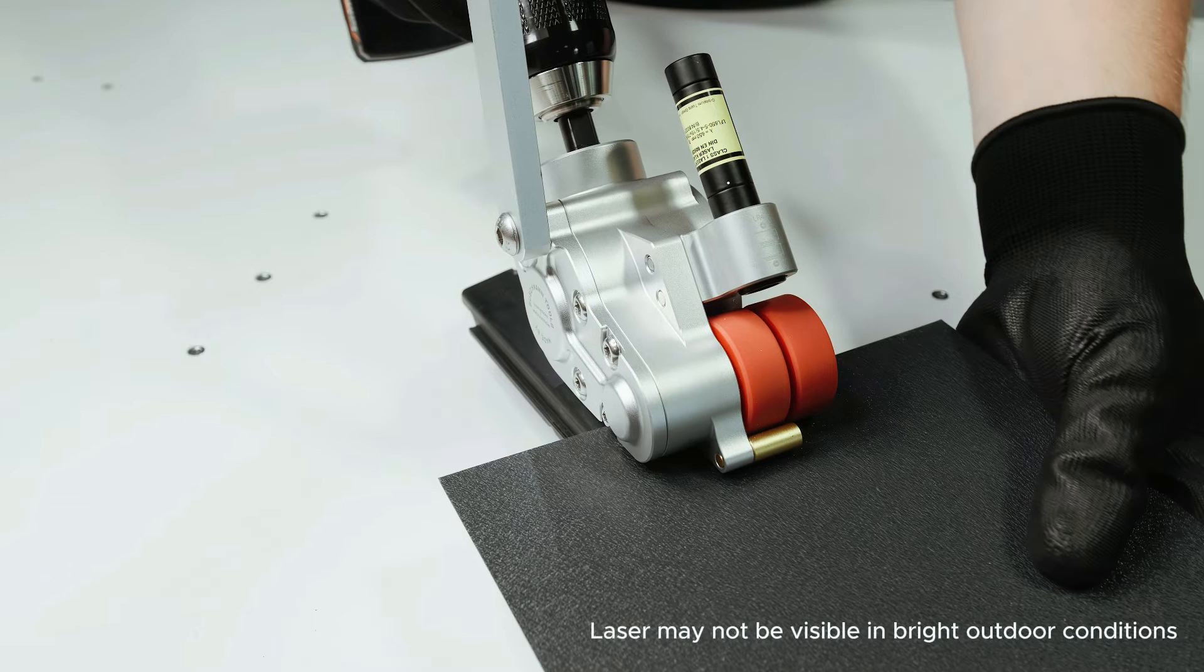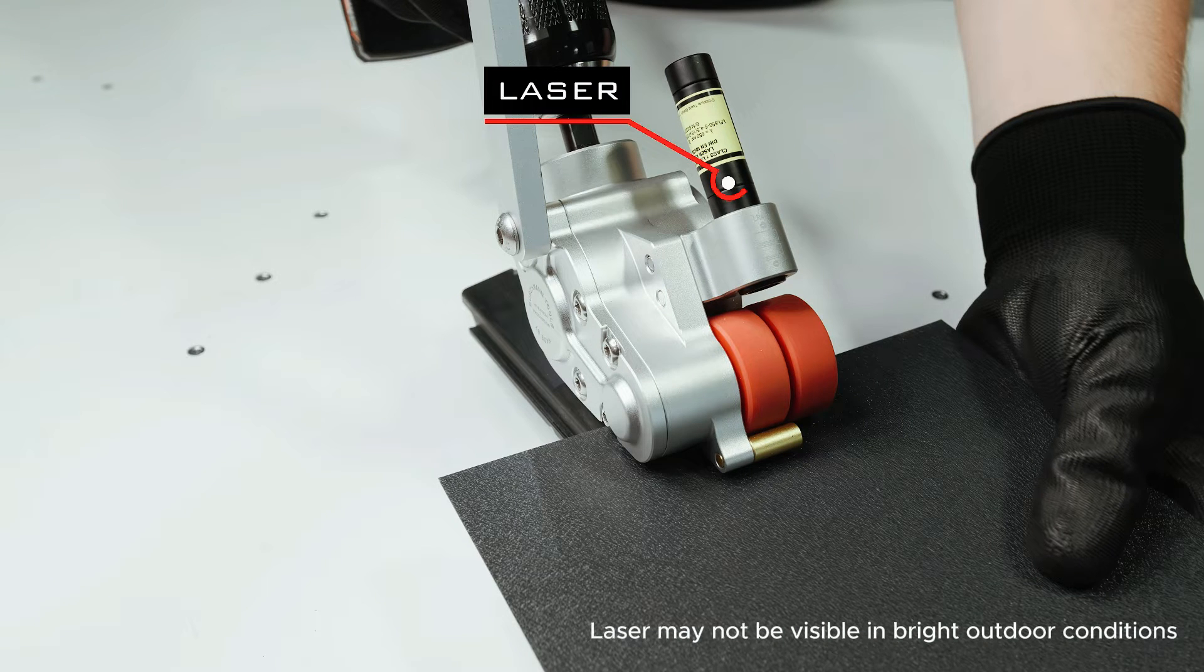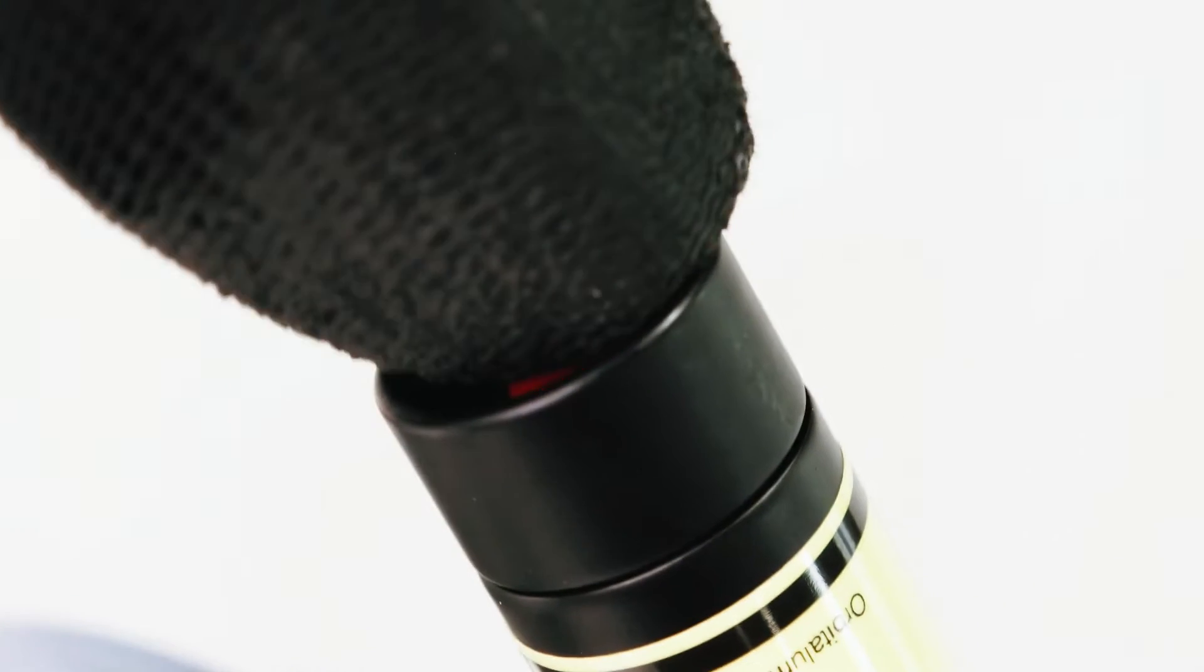The roll cutter is equipped with a laser for visual guidance. To turn the laser on or off, press the red button on top of the unit.